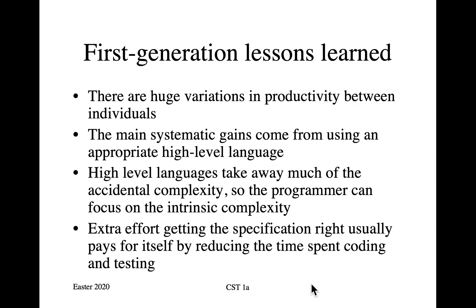The second lesson is that the main systematic gains come from using an appropriate high-level language. My first serious job at Ferranti was adapting an inertial navigation system whose software was written in machine code — a complete pain, because you had to perpetually remember which memory address and register held which variable at which time, depending on whether the machine was in normal or interrupt mode. You spent about half your time on housekeeping. There are two types of complexity in software: accidental complexity, like remembering that register 14 during an interrupt holds the current yaw rate, and intrinsic complexity, like the underlying mathematics of navigation. High-level languages take away much of the accidental complexity.